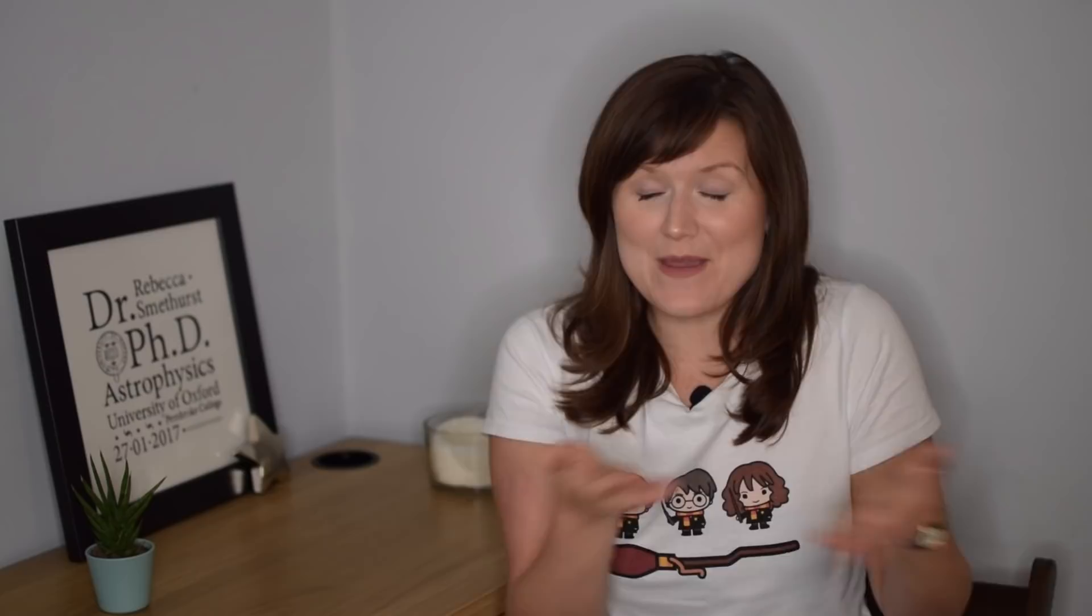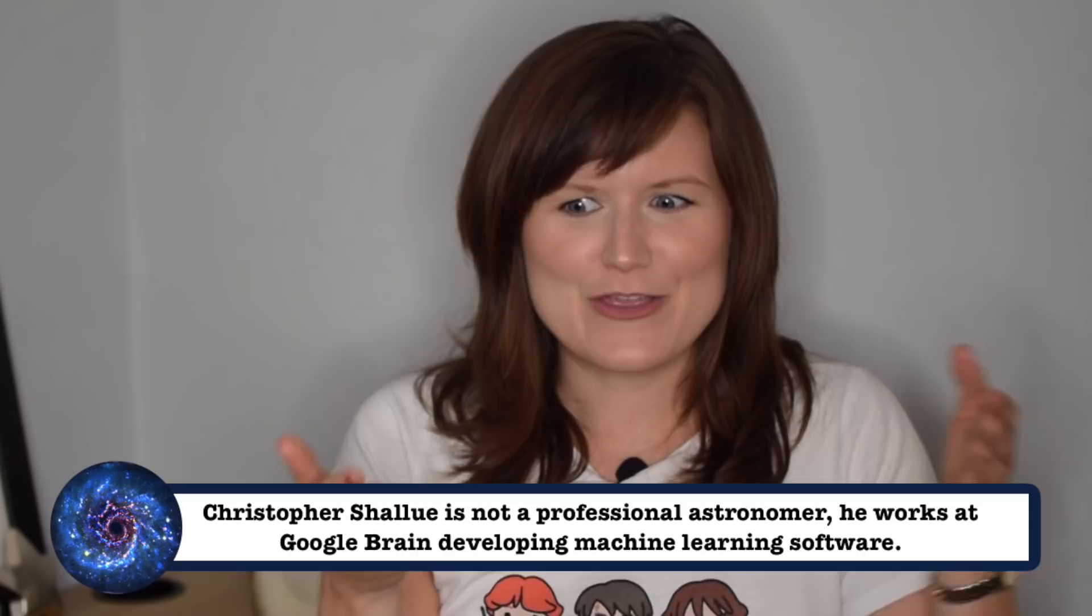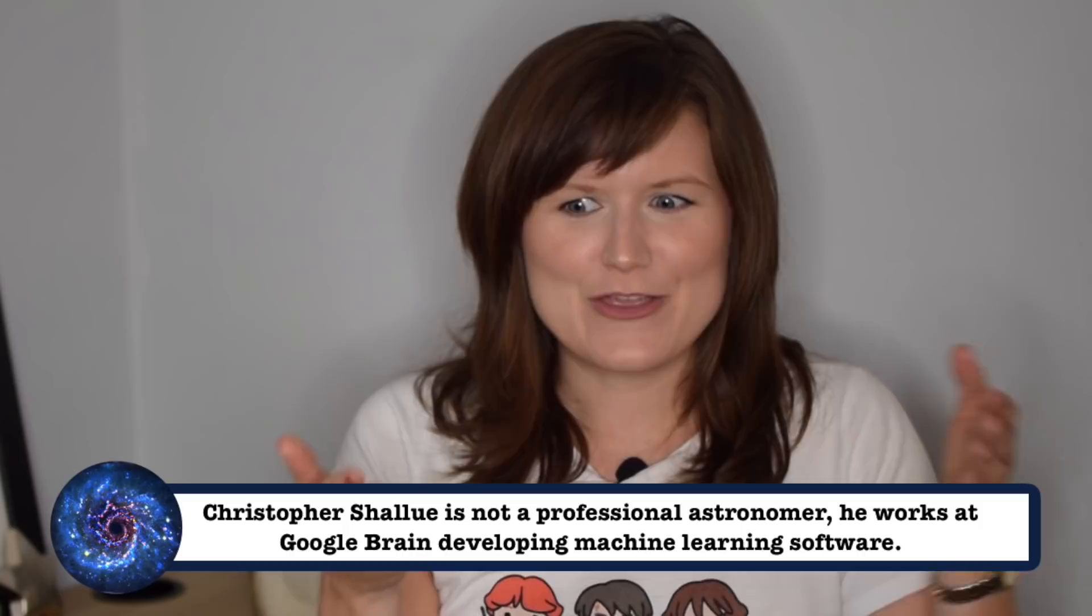Then, later in the year, Shallue and Vanderburg announced the discovery of an eighth planet around Kepler-90, Kepler-90i. This made it as big as the solar system and the biggest exoplanet system known. But it was also a landmark discovery because the planet Kepler-90i was discovered in the data using machine learning. It was an algorithm that had been developed by the team at Google Brain. So not only the biggest exoplanet system known, but also the first planet that was discovered by machine learning.